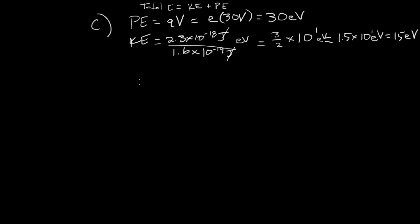Alright. Let's look at our total energy now. Total energy. Oh, I made a big mistake. Q here is minus E. And so I get a potential energy of minus 30 volts.